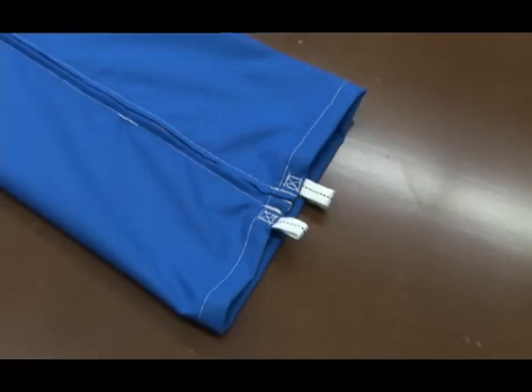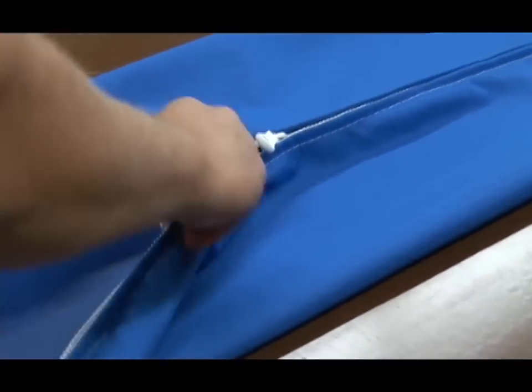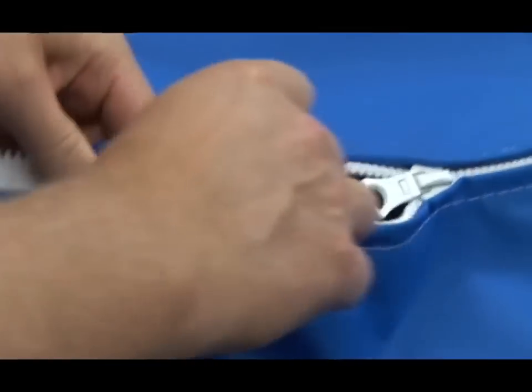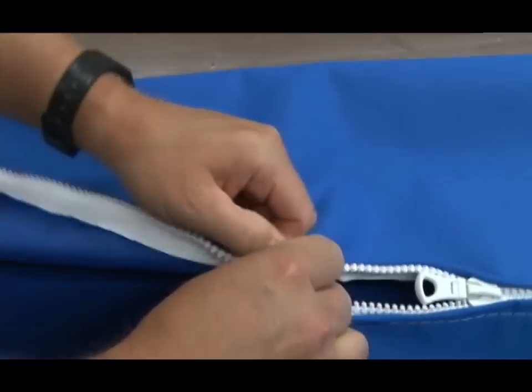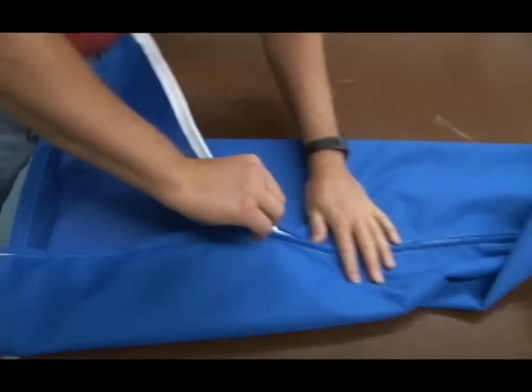There are a few choices for protecting the sail from the UV. You can put on a sacrificial cover on the leech and the foot, or you can do as this video shows, build a sleeve that would be pulled up over the furled sail to protect it from the elements.